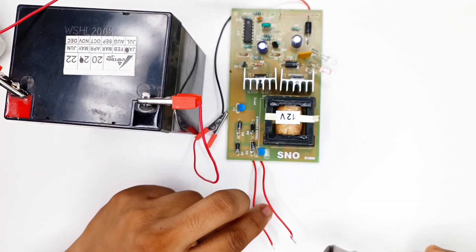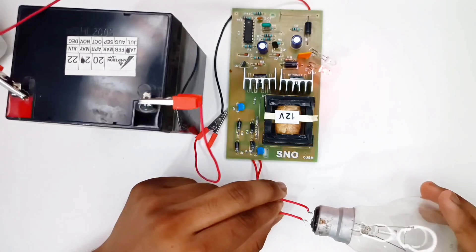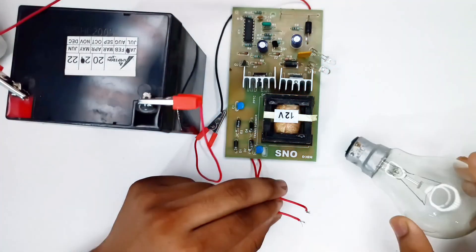This is a 100 watt bulb. Let's make the connection between the inverter output. As you can see, the 100 watt bulb is glowing.